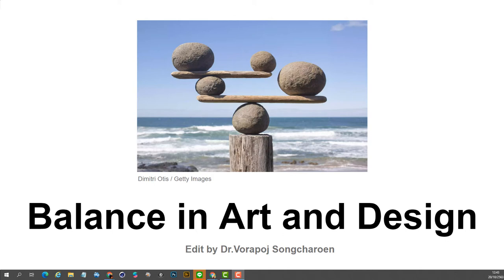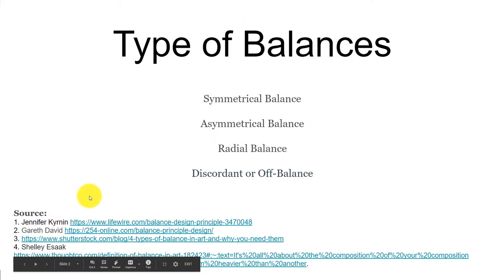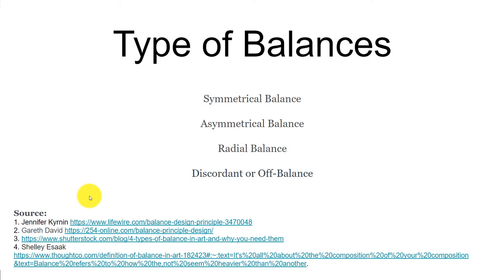This is Pod. I like to talk about the balance in art and design. As you can see, there are many types of balances, but in this particular case I'm grouping them into four different groups. The first one is symmetrical balance, second asymmetrical balance, third radial balance, and the last one is discordance or off-balance.